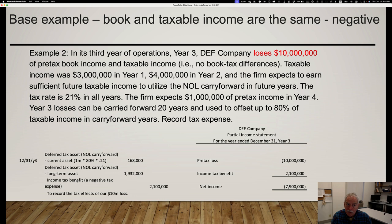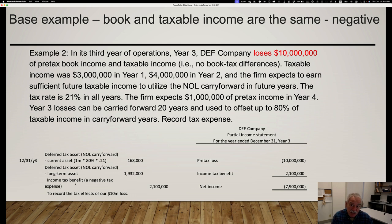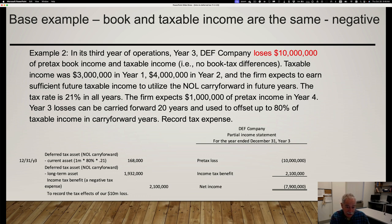We have income tax benefit here, which is basically income tax expense with a credit balance—that's the plug figure. We credit income tax benefit; it's kind of like income. On the income statement for GAAP purposes, the pre-tax loss is $10 million, and we have this $2.1 million benefit, so after tax we only lost $7.9 million. In this way the government shares in our pain and our gain—when we have a gain they take some of it as income tax expense, and when we have a loss they often give us a refund, at least to the extent we have future taxable income to use those NOL carry forwards.